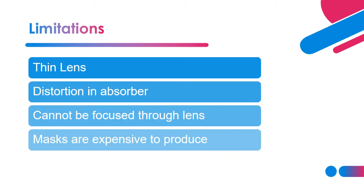However, X-ray lithography has some limitations. Thin lenses need to be used in the process, and some distortion in the absorber may occur. Distortion in the mask can also happen during the process, and it cannot be focused through a lens — there is no focus like in a projection process. Masks are also very expensive to produce because they must be made using electron beam lithography, which is costly and time-consuming.